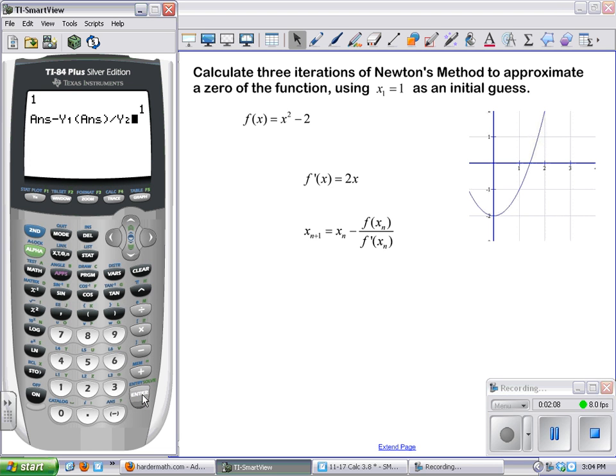So now we're dividing that by the second function. And in that function we need to tell what the input is as well. And in this case we still want to input that previous answer. And now when I hit enter, it's going to give me my next iteration of Newton's method.